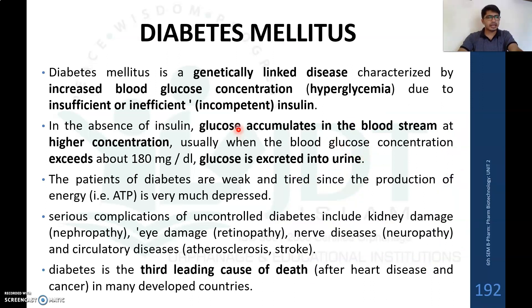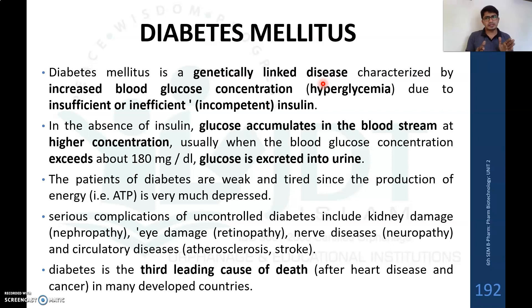What is diabetes mellitus? Diabetes mellitus is a genetically linked disease characterized by increased blood glucose concentration, also known as hyperglycemia. This may be due to insufficient production of insulin, or it may be inefficient insulin — meaning even if there is sufficient insulin produced, some insulin cannot bind with the insulin receptor, so the effect of insulin will not be present.